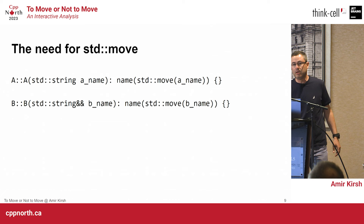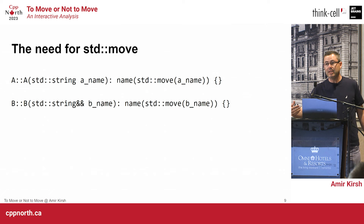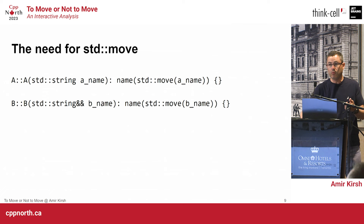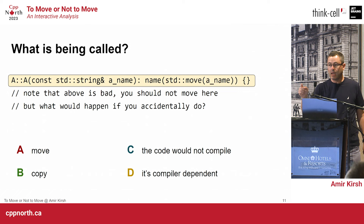Now the compiler will consider A-name and B-name as rvalues, and since std::string implements a move constructor, we call the move constructor. If we want to know what is being called: we call the move constructor because we did the std::move, so the argument is an rvalue. Now for the next question — count your points from this one — what is being called here? We have a constructor and we do std::move.